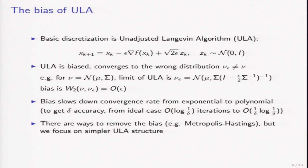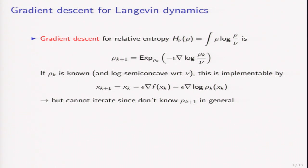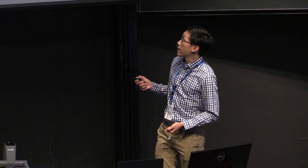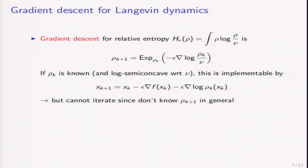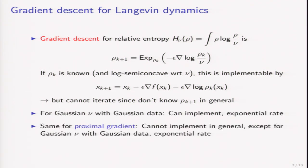Let's focus on the simpler ULA structure and see where it goes wrong. ULA cannot be the gradient descent discretization because it's biased. We can ask what is the gradient descent discretization of Langevin dynamics. We can write down what gradient descent for minimizing relative entropy is — this equation. But the problem is that only in very specific situations, for example when the density rho_k is known and satisfies some log-semiconcavity condition, can we implement this using this update. We cannot iterate this because we don't know what the next density is, except in the case of a Gaussian target measure with Gaussian data, where we can implement this and see that it converges exponentially fast as expected.